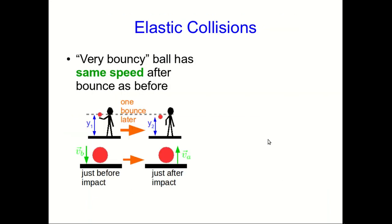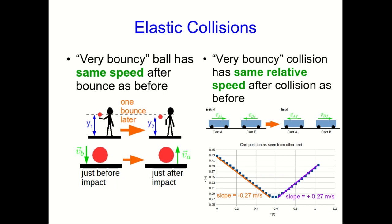Relative speed is the tool we need. In analogy, a very bouncy ball has the same speed after the bounce as before. As we've seen with the carts colliding and in our data, a very bouncy collision like the magnetic interaction has the same relative speed after the collision as before.